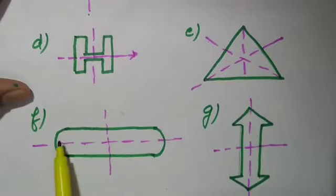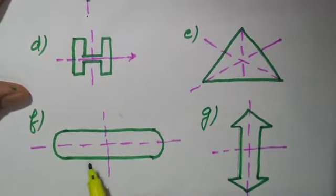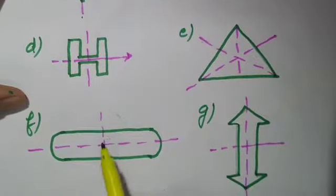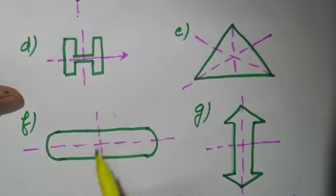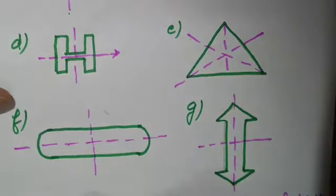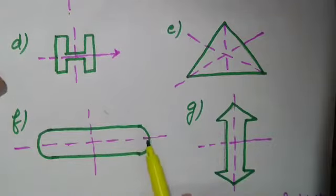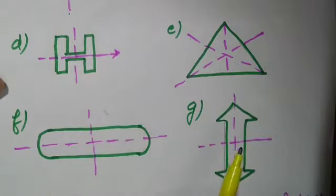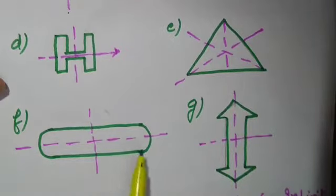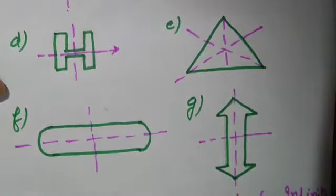Come to part F. Part F has semicircular ends and two straight lines. This figure has two lines of symmetry — horizontal line of symmetry as well as vertical line of symmetry. This figure does not have a diagonal line of symmetry because on folding through any diagonal those parts will not overlap. They may be equal but they will not overlap, similar to how a rectangle also does not have a diagonal as a line of symmetry.